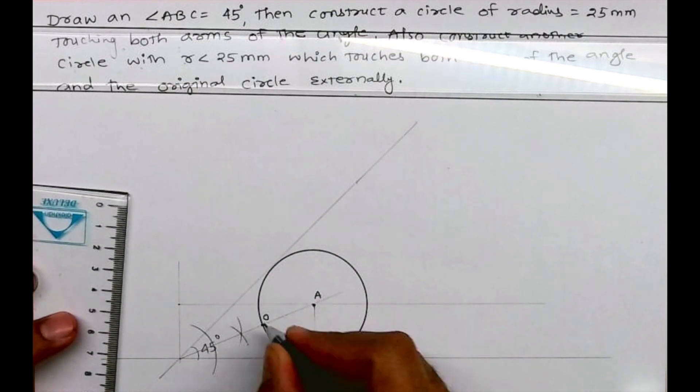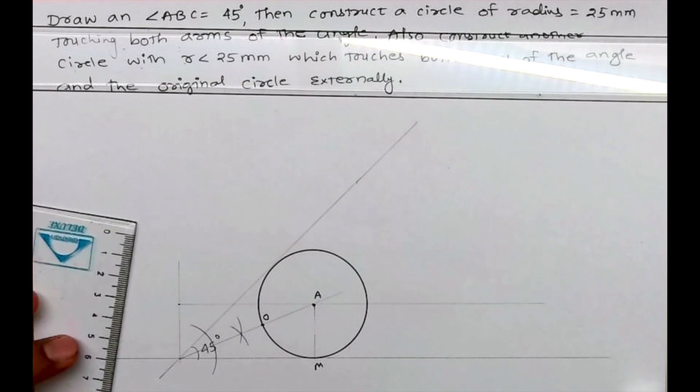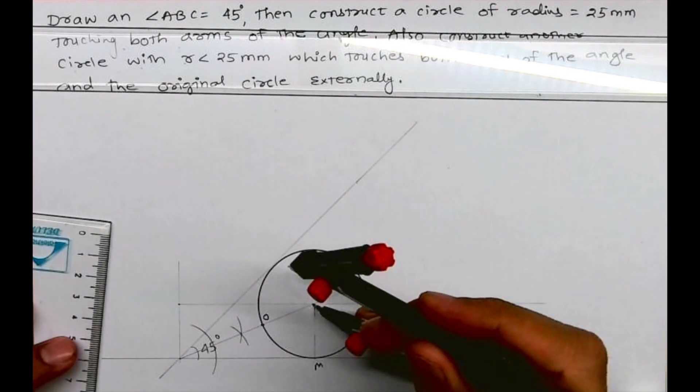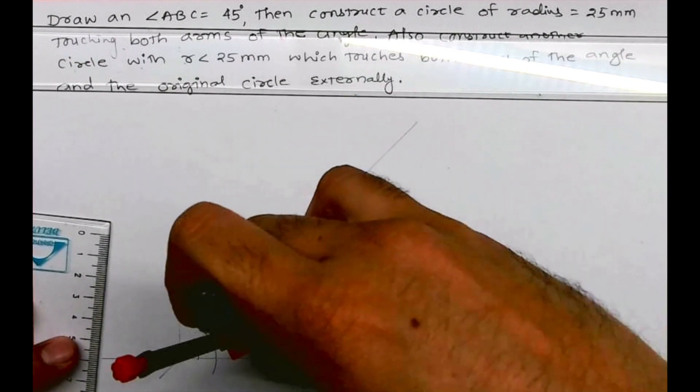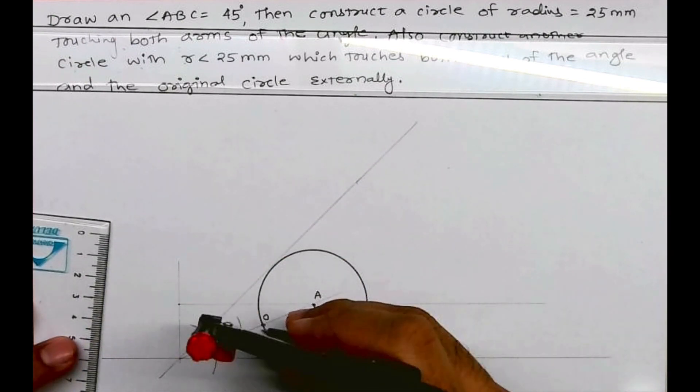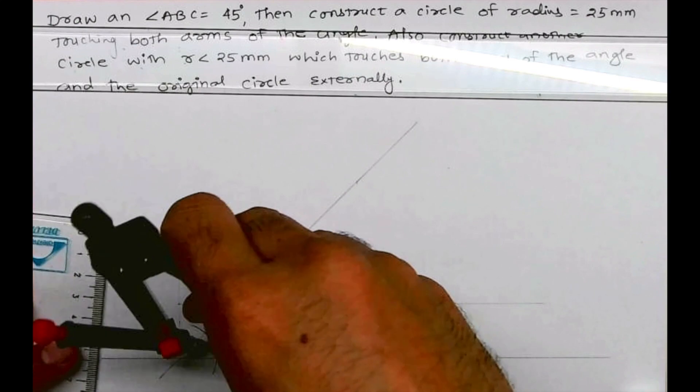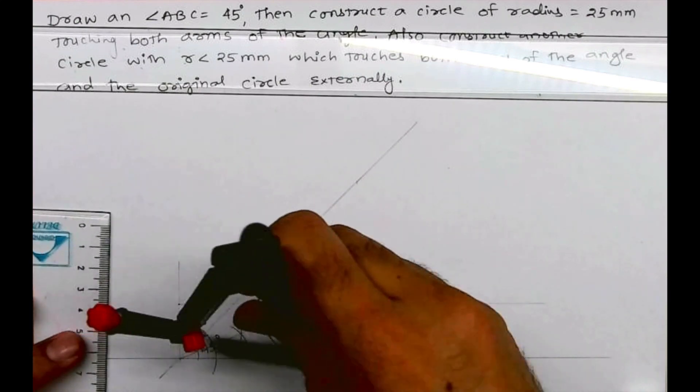Now this is point O. Take A to O, and from O you cut here, you'll get point B. Then you bisect AB.